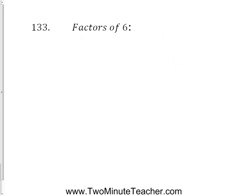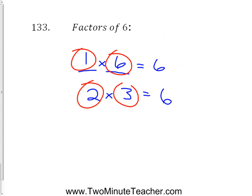The factors of 6: factors are two numbers you can multiply to make 6. The combos are 1 × 6 and 2 × 3, so 1, 2, 3, and 6 are all factors of 6. When listing factors we use positive integers only — not fractions (like 1/2 × 12) and not negatives (like −3 × −2), even though those also equal 6.